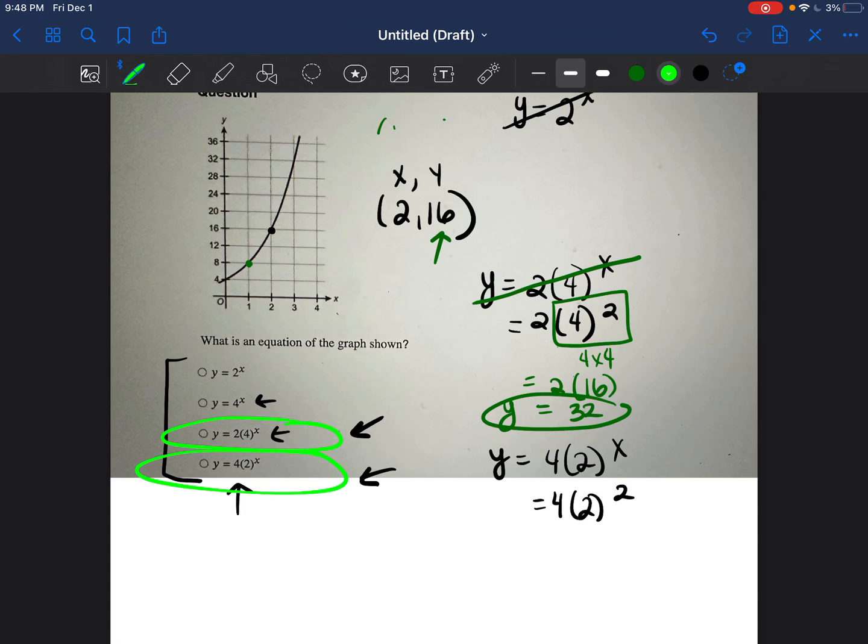But let's go ahead and double check to see if this last one is our equation. So we're going to do the exponent first. 2 times 2 is 4. 4 times 4 is 16. y is equal to 16. So our answer is going to be this final equation.